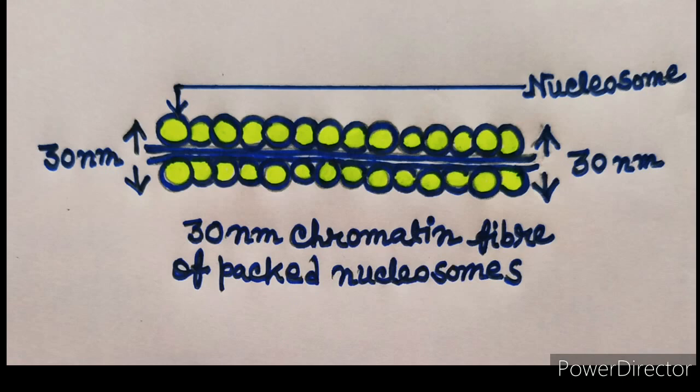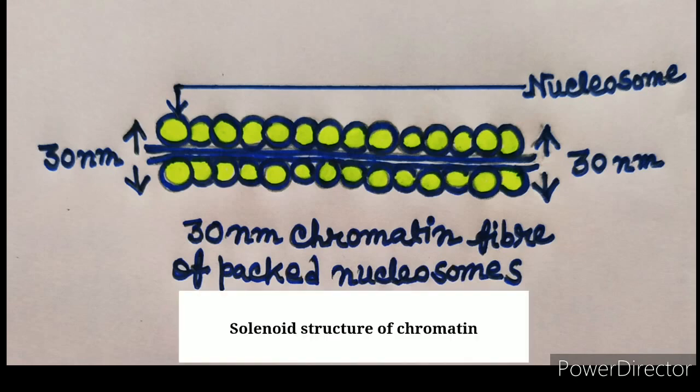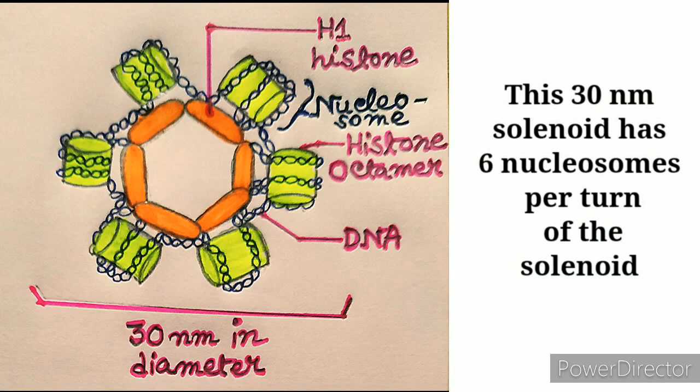This 30 nanometer fiber is called the solenoid structure of chromatin. This solenoid structure of chromatin is a model for the structure of this 30 nanometer fiber. And this 30 nanometer solenoid has six nucleosomes per turn of the solenoid.